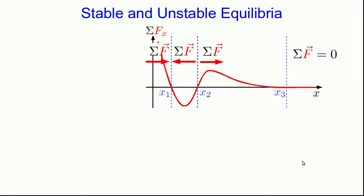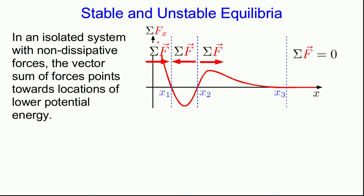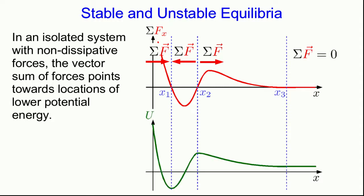The final thing I want to do is connect this with something we saw way back in the unit on interactions. At that time we saw that in an isolated system with non-dissipative forces, the sum of forces points towards locations of lower potential energy. So now think about around x1. If you go to either side of x1 the force points towards x1, which means that must be the lowest potential energy in that vicinity, and so that's what a stable equilibrium looks like on a potential energy versus position graph—it's a minimum. Similarly if you go to either side of x2 the forces point away from x2, and so x2 must be a location of maximum potential energy. And out beyond x3 where the force is zero, that's just telling us since the force doesn't point either way, neither way is downhill in U, and so the slope of the potential energy must be zero out there.